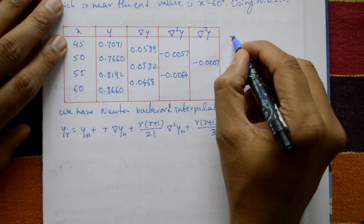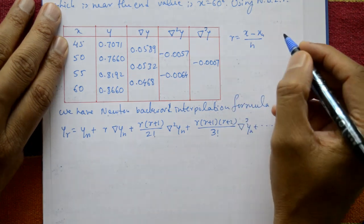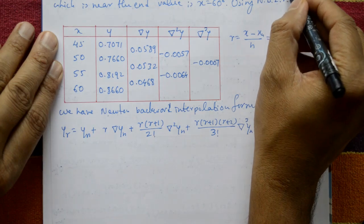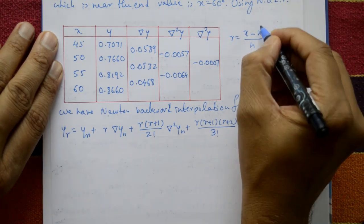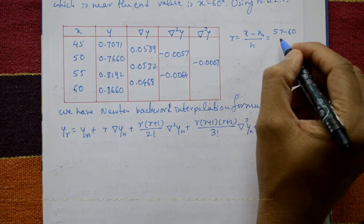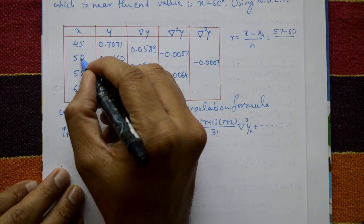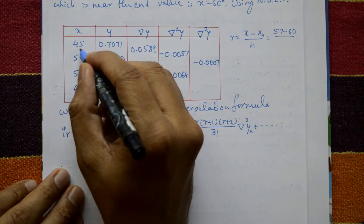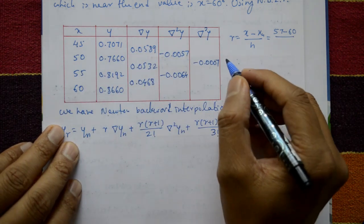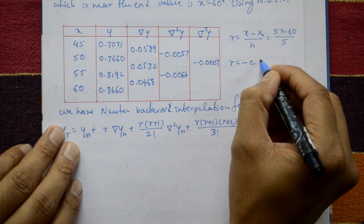Now we find R. R = (X − X_N) / H. X is the given value 57, X_N is the last value 60, and H is the equidistant step size. The difference between consecutive x values is 5, so H = 5. Therefore R = (57 − 60) / 5 = −0.6.